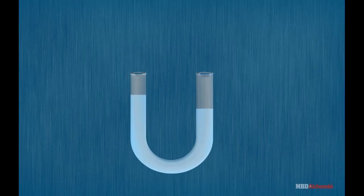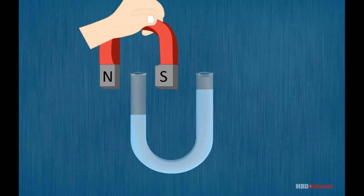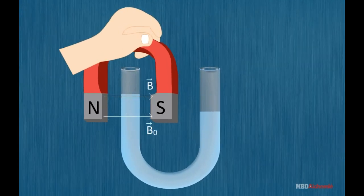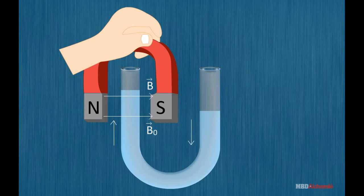When a sample of paramagnetic liquid is put in a U-tube and strong magnetic field is applied across one of the two limbs, the level of liquid rises. This proves the movement of paramagnetic liquid from weaker to stronger parts of the field.